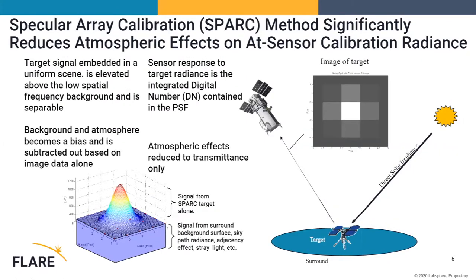The Flare technology is based on a technique called SPARK — the Specular Array Calibration. Instead of using a natural Lambertian surface which responds to any form of radiation coming from the environment, here we only care about one ray: the direct solar path to the mirror, because this is a specular mirror reflecting back up to the satellite. We do care about the background — it's a big part of the extraction — but for the most part we don't care about a lot of the other things. We could have clouds as long as we have a clear path to the satellite and from the sun.